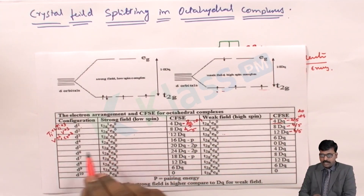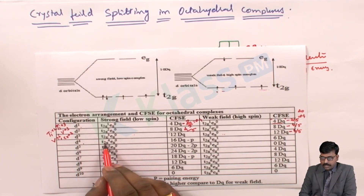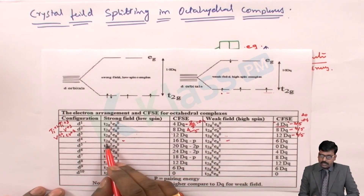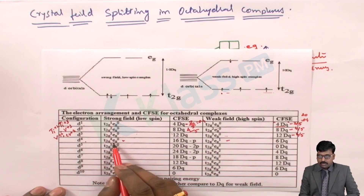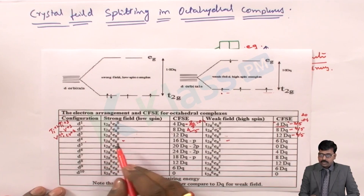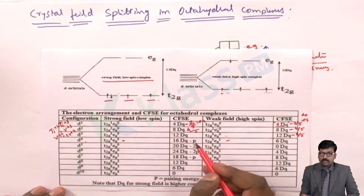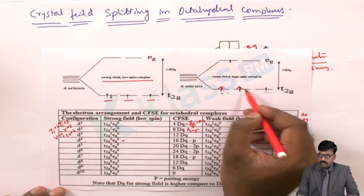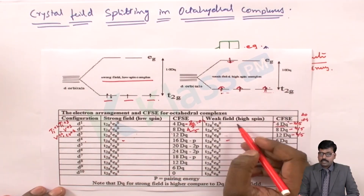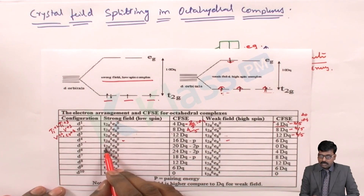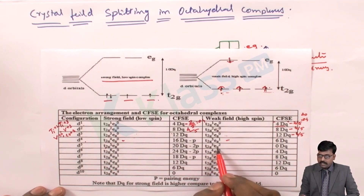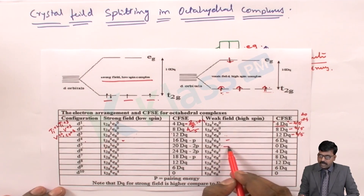For the d4 electronic configuration, the splitting differs between strong field and weak field ligands. With a strong field ligand, the energy gap between T2G and EG is very high, so electrons pair up within the T2G level. With weak field ligands, the energy gap is smaller, so electrons are distributed with all levels half-filled first.